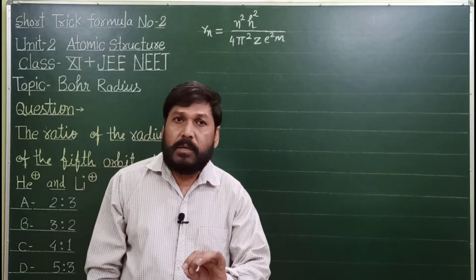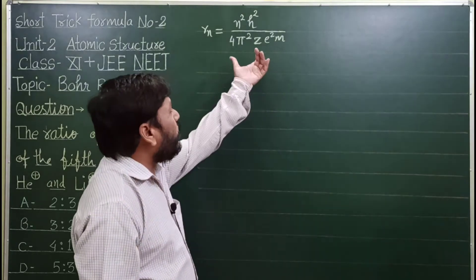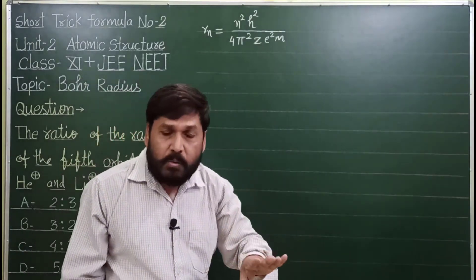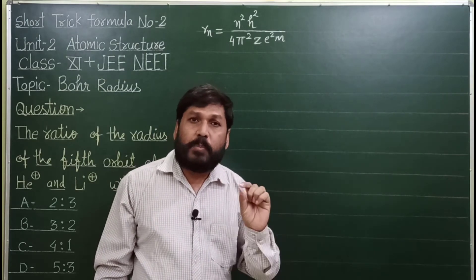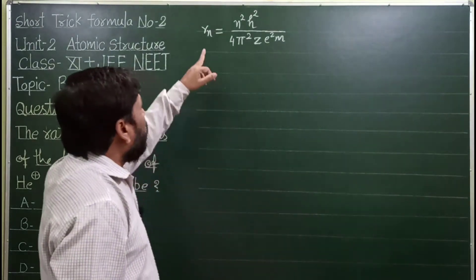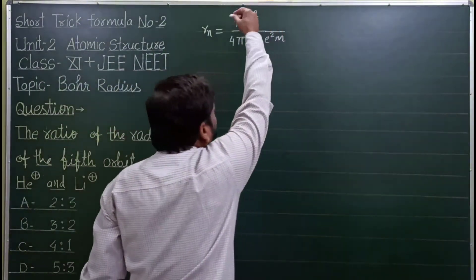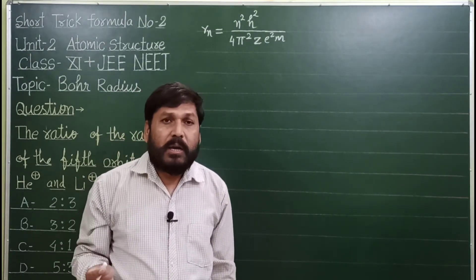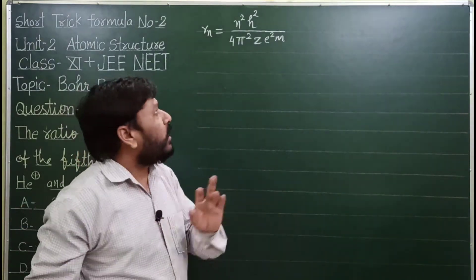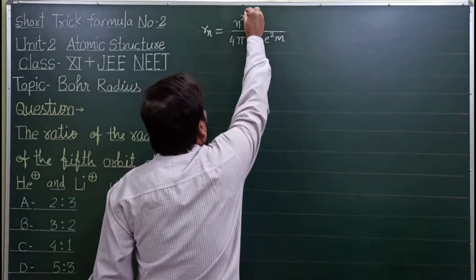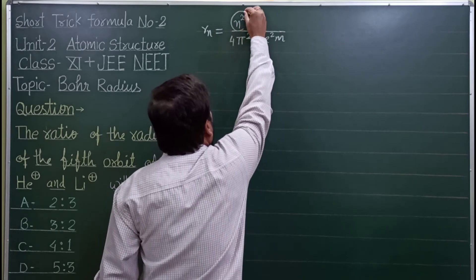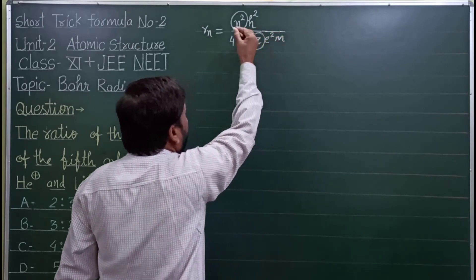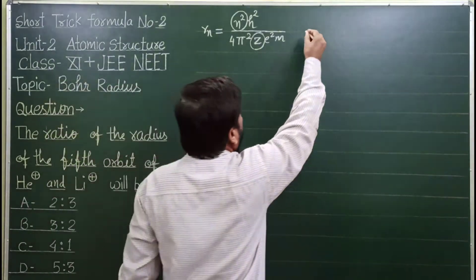सबसे पहले हम इन सबका मतलब जान लें और इस formula का हमें कैसे यूज करना है। क्या हम इतने बड़े formula को यूज करके कम समय में question solve कर पाएंगे? तो आंसर होगा नहीं। तो देखिए इस formula को मैं कैसे simple बनाना आपको बताता हूं। इसमें जो n होता है और जो z होता है — ये दो changing values हैं, और सारी की सारी बाकी values constant हैं।